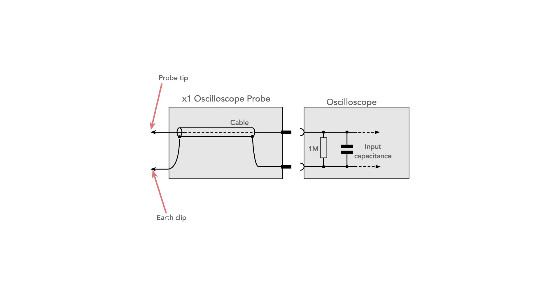Probes present an impedance to the circuit under test. For passive probes this is one megaohm at DC, and for times ten probes it's ten megaohms.